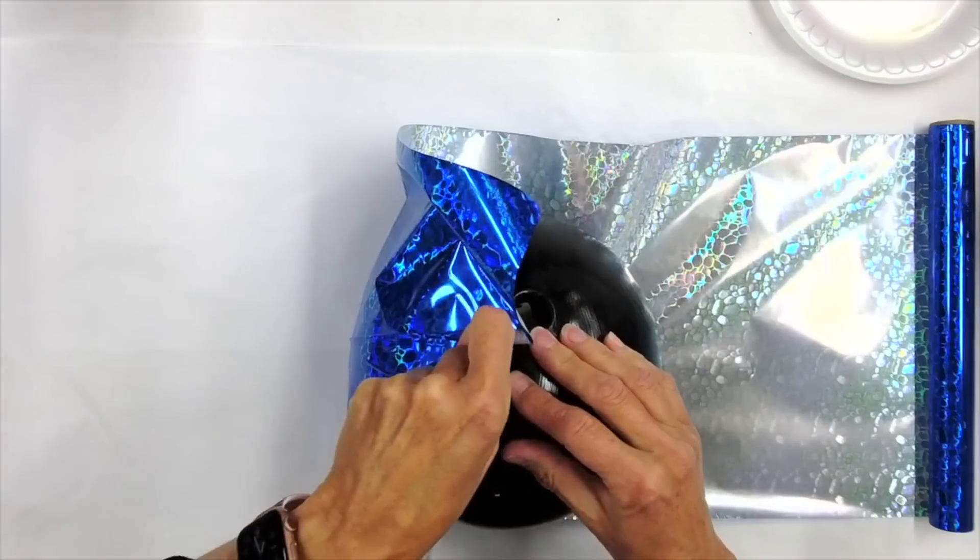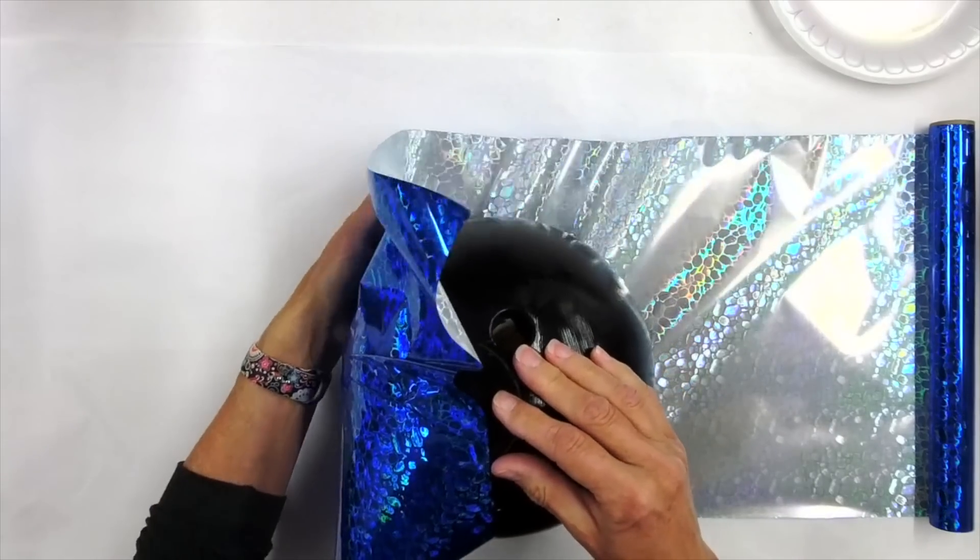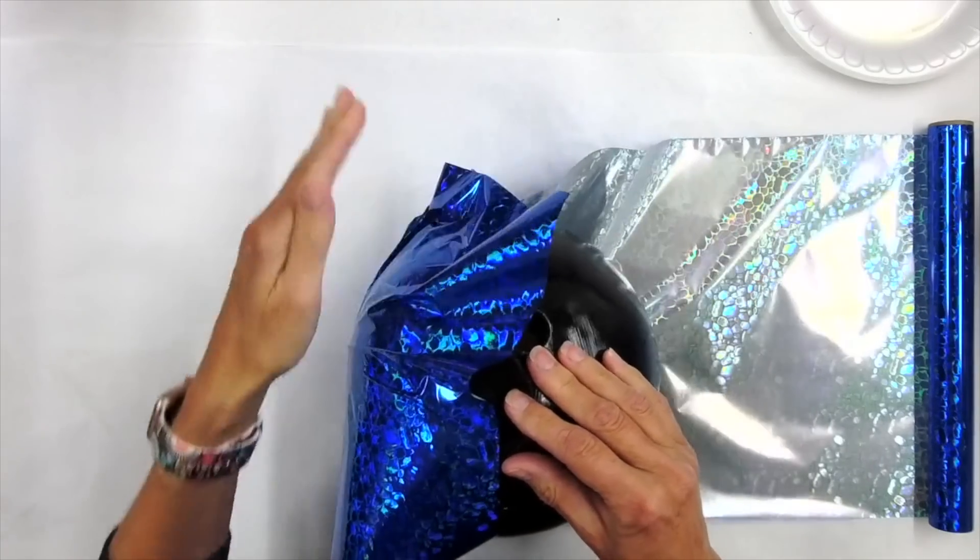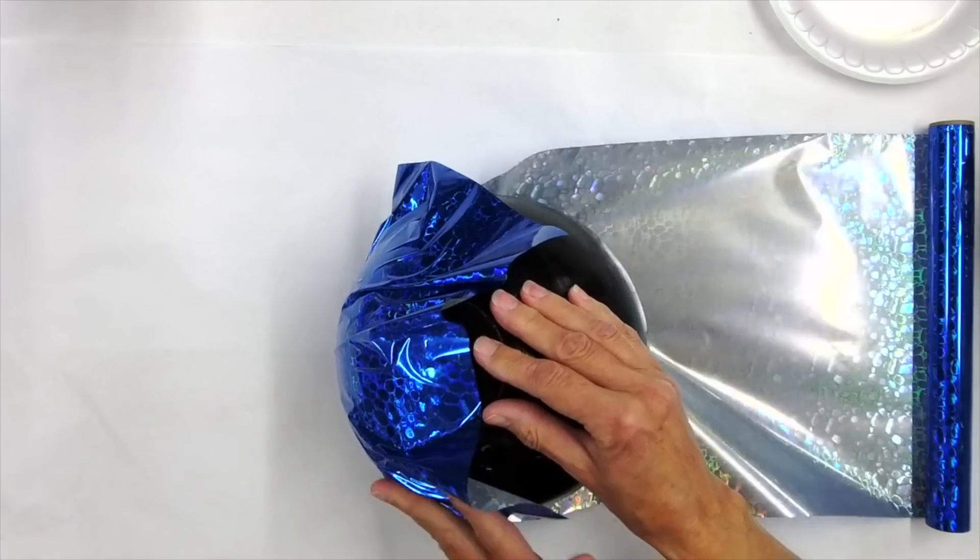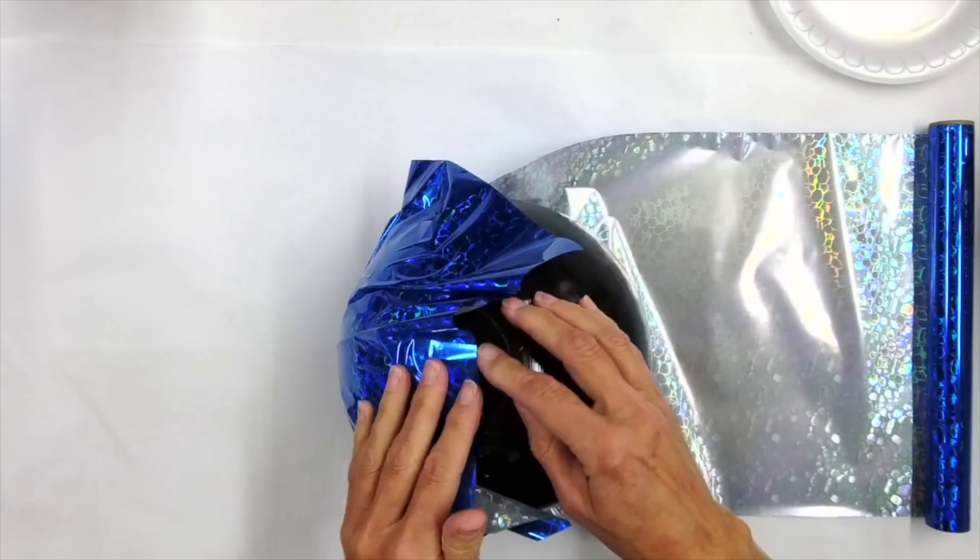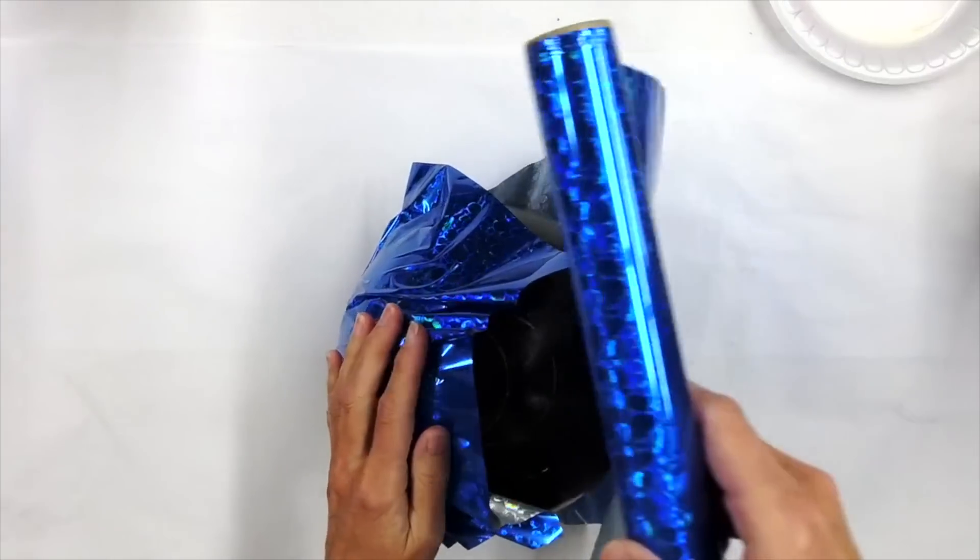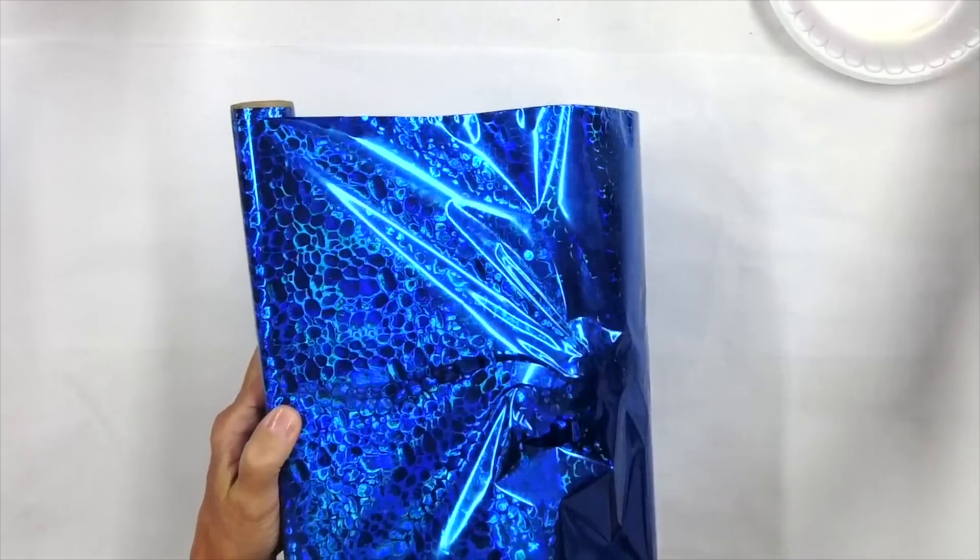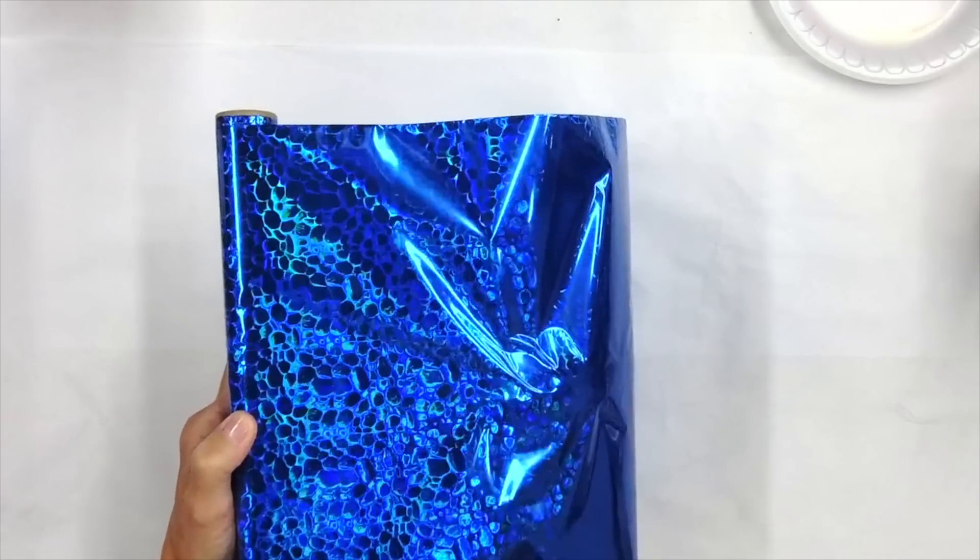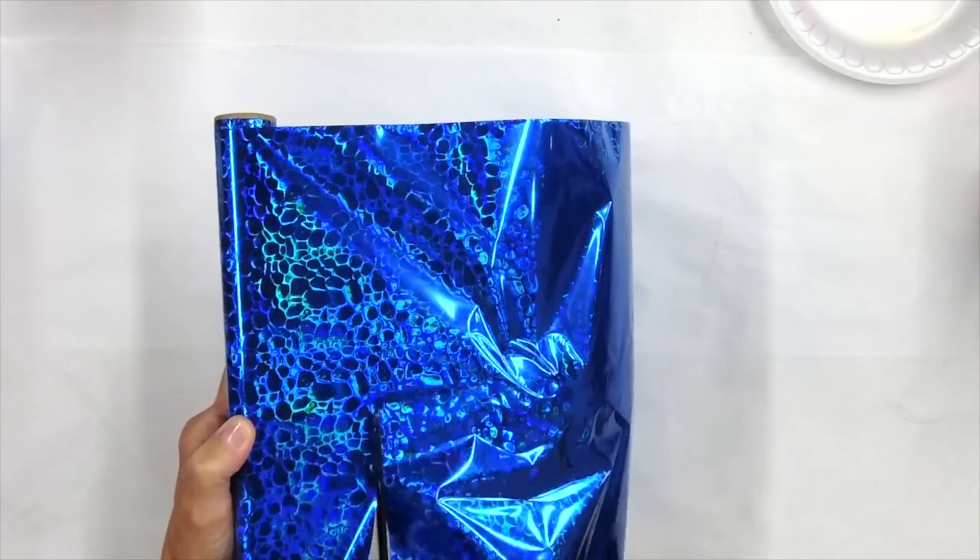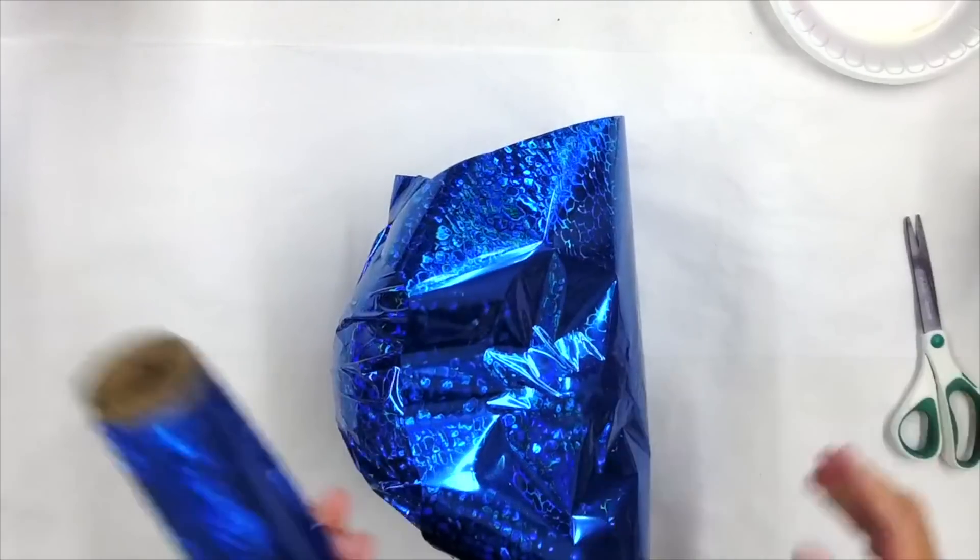And I'm just going to wrap the bowling ball. There's no pretty way to do this. No perfect way. It's going to have wrinkles and crinkles. And I'm just going to cut off the excess here so that we can work with this.